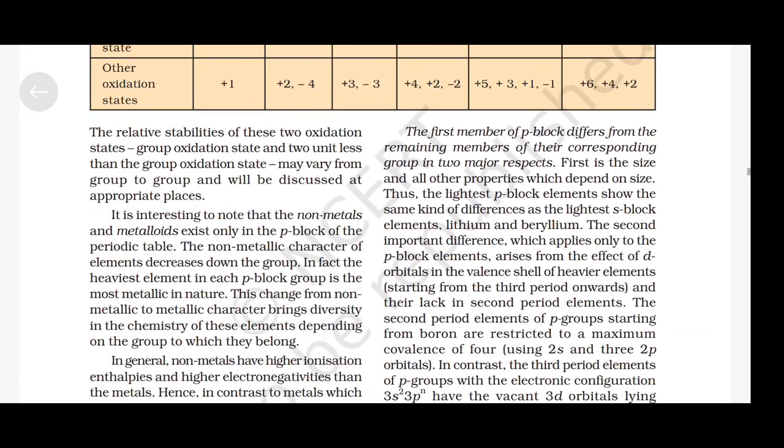The compounds formed by highly reactive non-metals with highly reactive metals are generally ionic because of large differences in electronegativities. On the other hand, compounds formed between non-metals themselves are largely covalent in character because of small differences in their electronegativities. The change from non-metallic to metallic character can be best illustrated by the nature of oxides they form — non-metallic oxides are acidic or neutral, whereas metallic oxides are basic in nature.